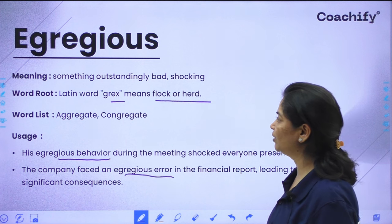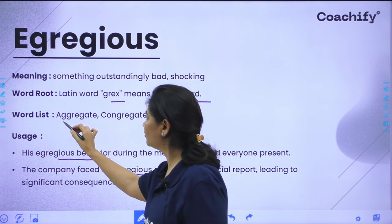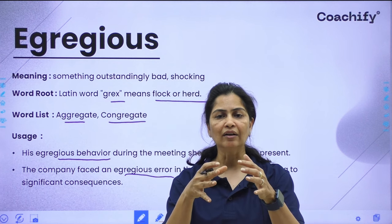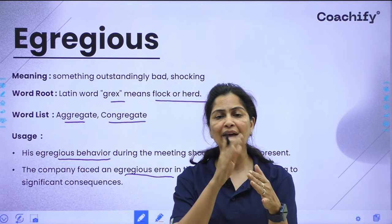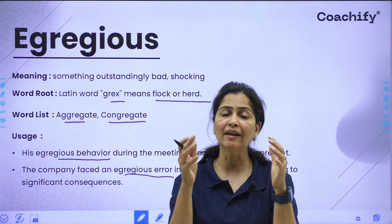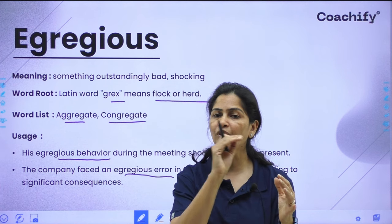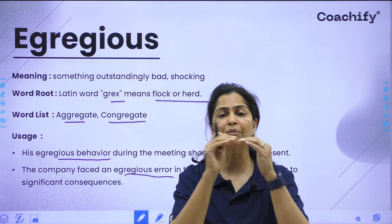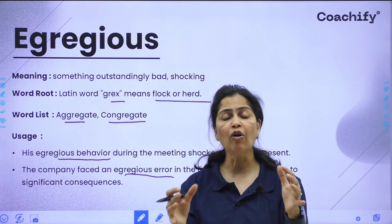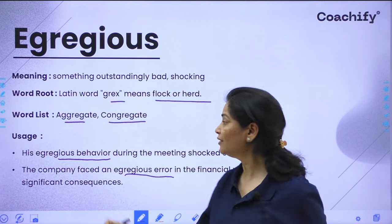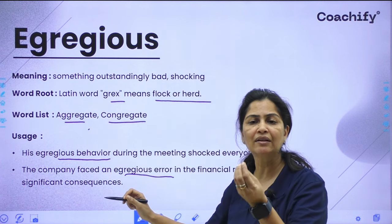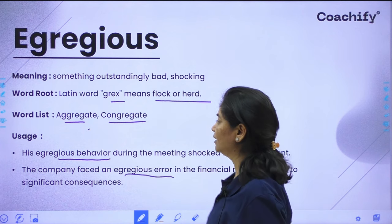Related words are 'aggregate' and 'congregate' — both mean combining together, but with a difference. Aggregate means combining parts, like combining marks from different tests to get an aggregate score. Congregate means grouping together of people. So aggregate relates to non-living parts or entities, while congregate relates to people.